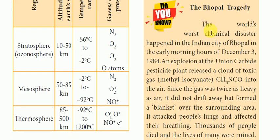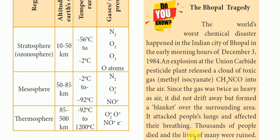The world's worst chemical disaster happened in the Indian city of Bhopal. In the early morning hours of December 3, 1984, an explosion at the Union Carbide pesticide plant released a cloud of toxic gas — methyl isocyanate (CH3NCO) — into the air. Since the gas was twice as heavy as air, it did not drift away but formed a blanket over the surrounding area, attacking people's lungs and affecting their breathing. Thousands of people died.